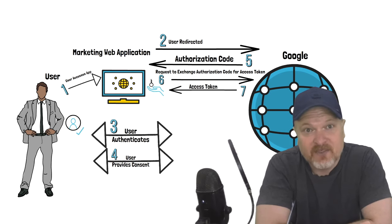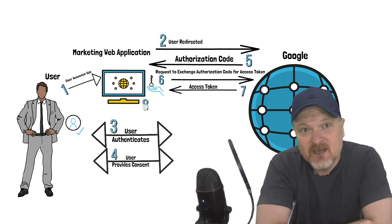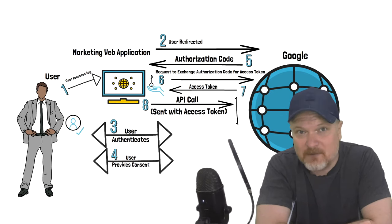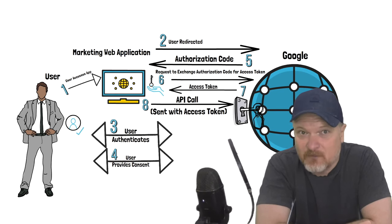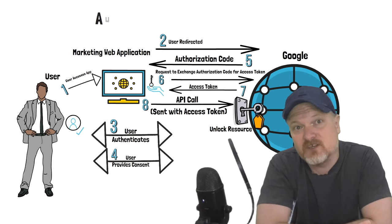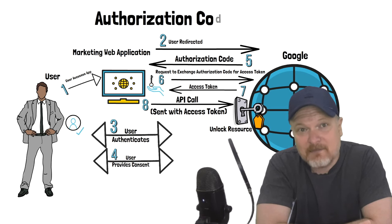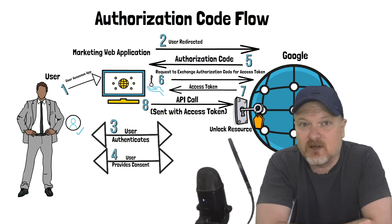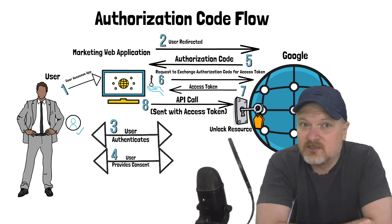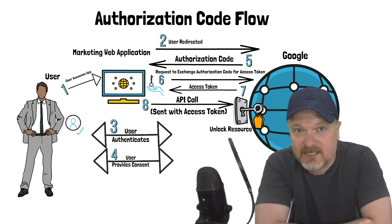The client sends an HTTP POST request containing the client ID, the secret, and the authorization code to the authorization server. If the request is validated, the authorization server issues the client with an access token. The marketing web application then sends an HTTP GET request to the Google API resource server, which returns the user's Google contacts, allowing the app to securely execute marketing campaigns on behalf of the user.